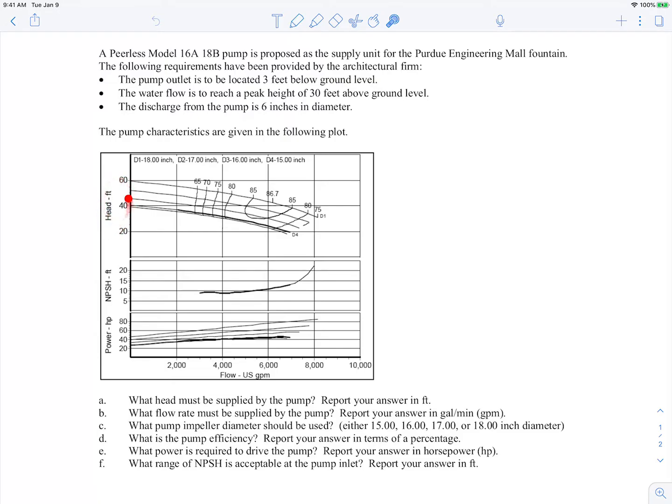You can see here we have the head rise that we get from the pump as a function of the flow rate through the pump. This is the NPSH and the power of the pump. And if you look on this plot, you'll see that there are actually four impeller diameters given: 18 inch, 17 inch, 16 inch, and 15 inch. That's D1, D2, D3, D4.